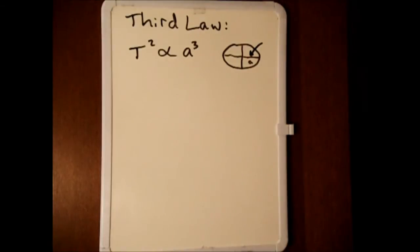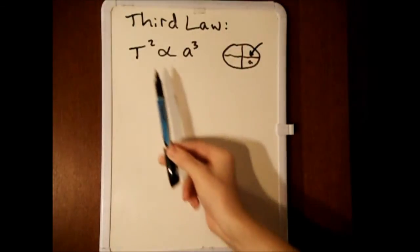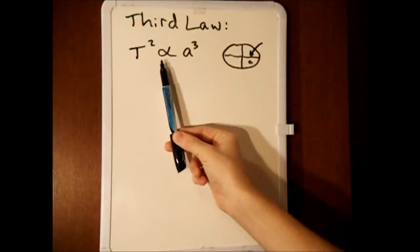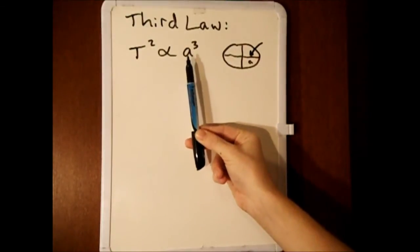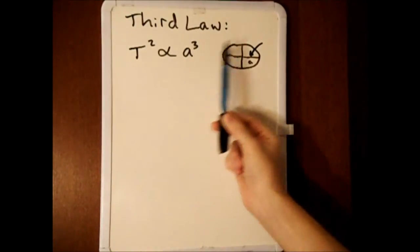In order to prove this, we must find an expression for the square of the orbital period that is equal to the cube of the length of the semi-major axis times some constant.